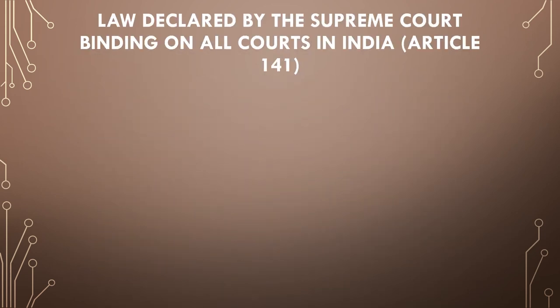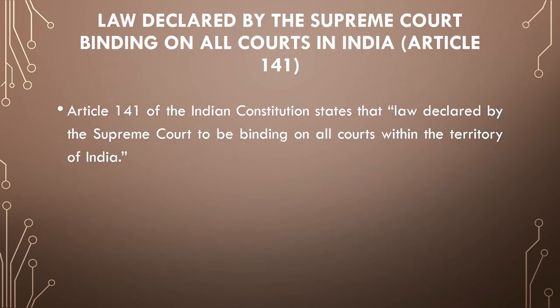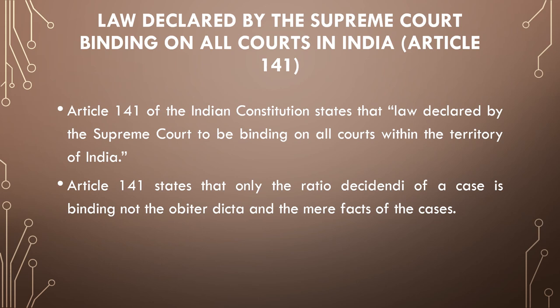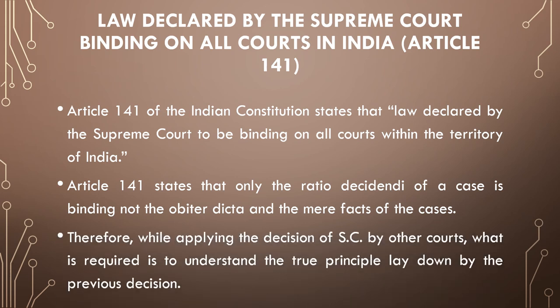The next jurisdiction is defined under Article 141 of the Indian Constitution, which states that law declared by the Supreme Court is binding on all courts within the territory of India. It also states that only the ratio decidendi of a case is binding, not the obiter dicta and the mere facts of the cases. Therefore, while applying the decision of the Supreme Court by other courts, what is required is to understand the true principle laid down by the previous decision.